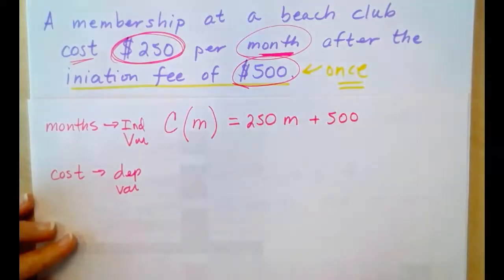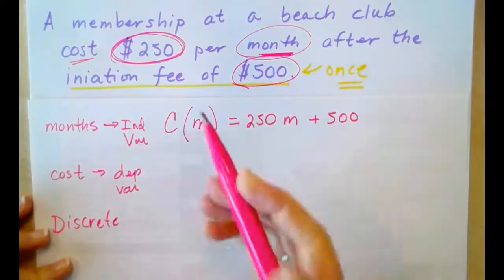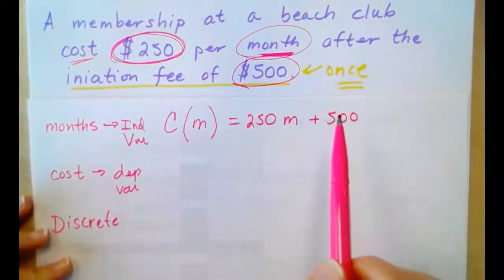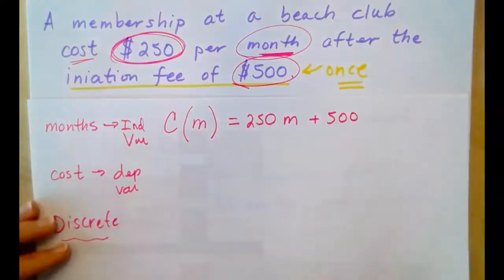Now, before we go on, this function is discrete. This is going to be a discrete function, and the reason why is nowhere in the problem does it offer the option of paying by the week or half of a month. No. You either pay by the month or you don't. So, this is a discrete function because it is not measured. It is either counted or listed.